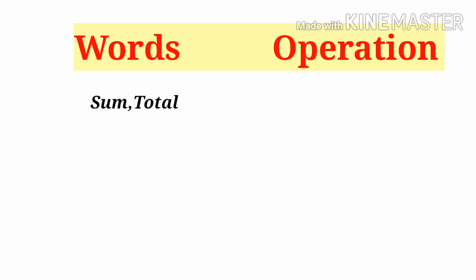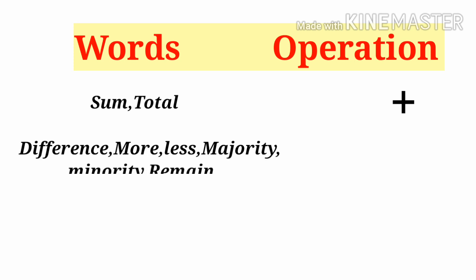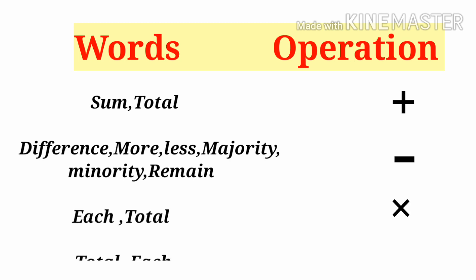Now before going to the actual problems, let us find some words which denote which operation to do. If you find 'sum' or 'total' in a problem, then we have to think of doing addition. If you find 'difference', 'more', 'less', 'majority', or 'remain' in a problem, then you should think of doing subtraction. If you find the words 'each' and then 'total' in a problem, then you should think of doing multiplication. If you find 'total' and then 'each', then you should think of doing division.